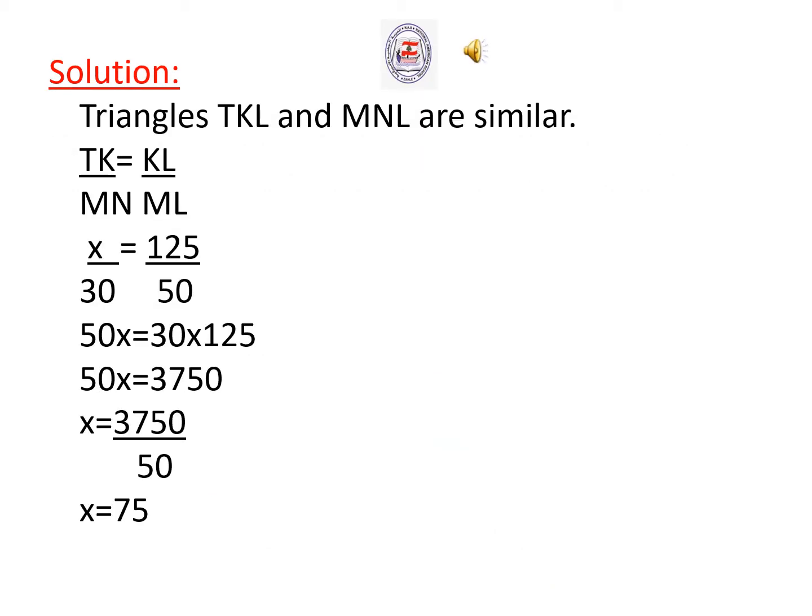Solution: The triangles TKL and MNL are similar, so we can write the ratio of proportionality TK over MN equal KL over ML. The corresponding side TK equals x. X over 30 equals 125 over 50. We substitute each side by its length.